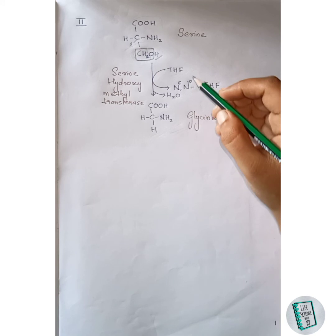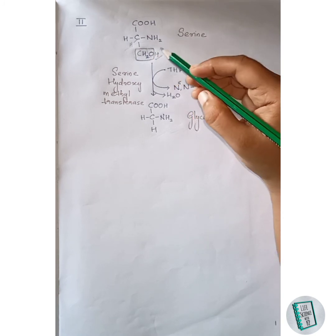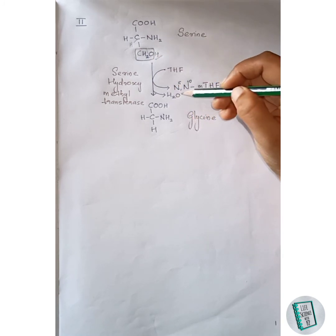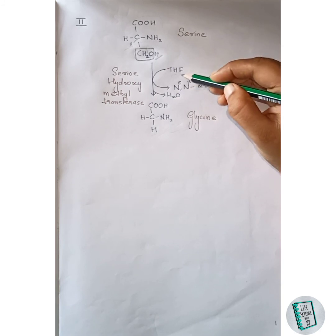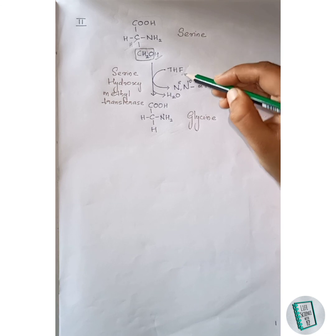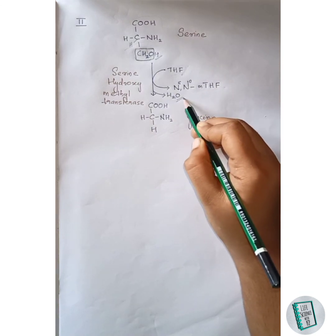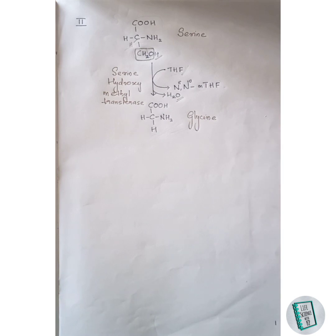The remaining oxygen then leaves as a water molecule by accepting two hydrogen atoms from the THF molecule, and this water molecule is released. This is the second degradative pathway of serine. That's all about the synthesis and degradation of serine.